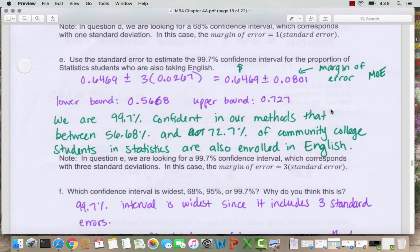So again, our prediction is about all community college students, the population value. And again, that 99.7% is how confident we are in our methods.